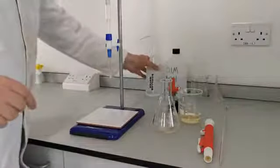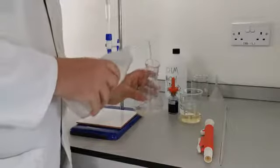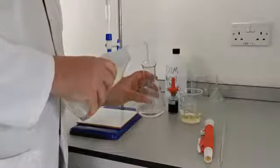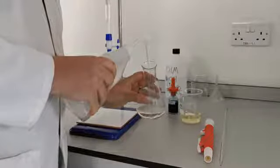Next, we add some distilled water to the sample. It doesn't matter how much you add here, because the amount of acid in the conical flask remains the same. It's simply done just to make the colour change easier to see.